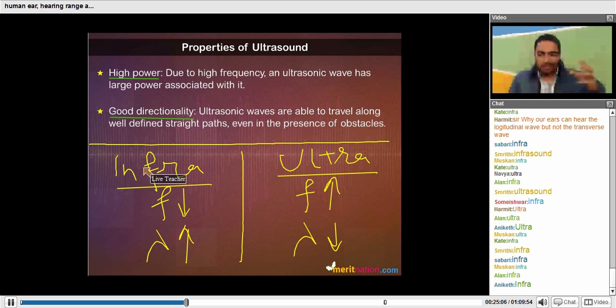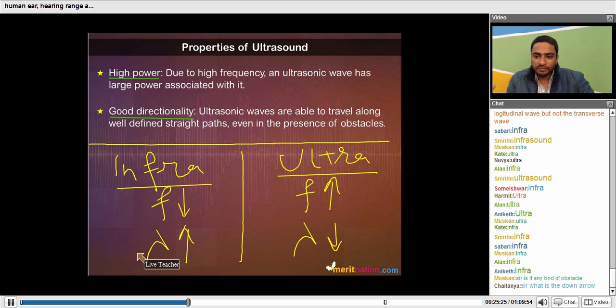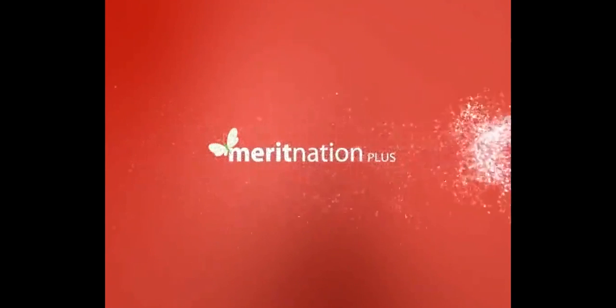So what happens is that due to the large wavelength of the infrasounds, they can get easily bent. That is, the size of the obstacle is pretty much very less than the wavelength itself. The size of the obstacle in the case of the infrasounds, they can bend.